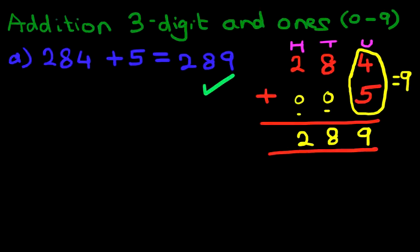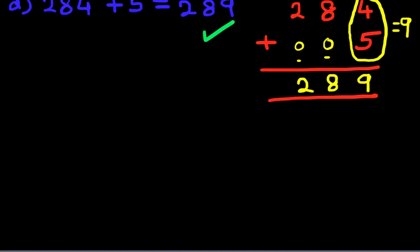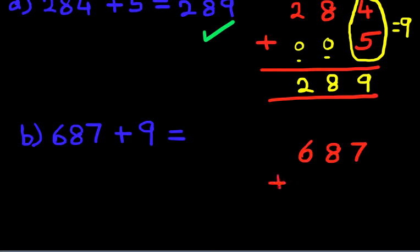Let's try one more example. Let's scroll down a bit. What is 687 plus 9? Now again, the first thing we do is we write these numbers down in the vertical format. So let's do that over here. 687 plus 9. Put the equal sign here. Let's label the columns again: units, tens, and hundreds.